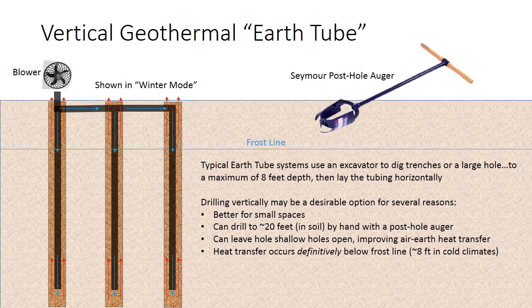Because it's vertical, you can get definitively below the frost line. You're not playing, especially in northern climates where the frost line may be deeper than you can get with a backhoe. I've seen people with these post-hole augers drill to 25 or 30 feet deep. I think 20 feet is a realistic limit.